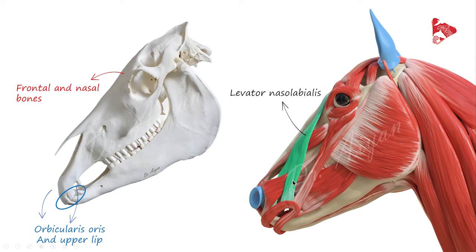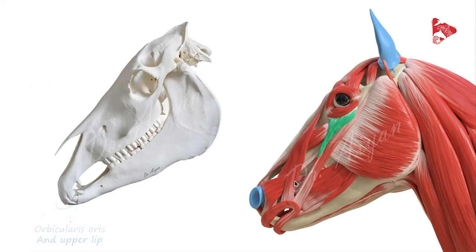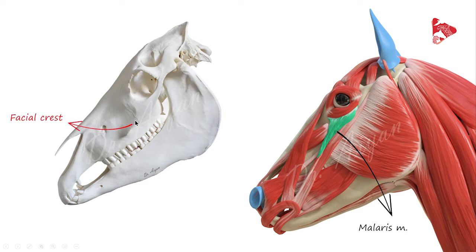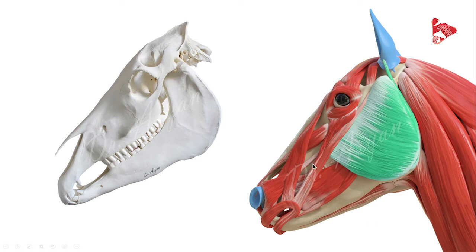The next muscle is the malaris muscle. It is a small muscle that extends from the dorsal border of the facial crest and inserts to the lower lid. From its origin and insertion, its function is to pull the lower lid ventrally.